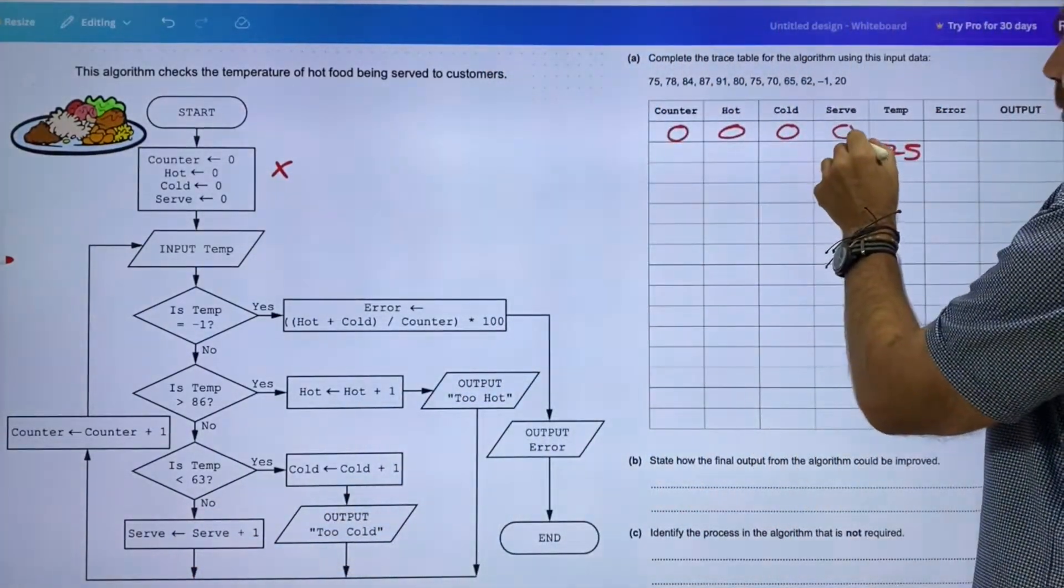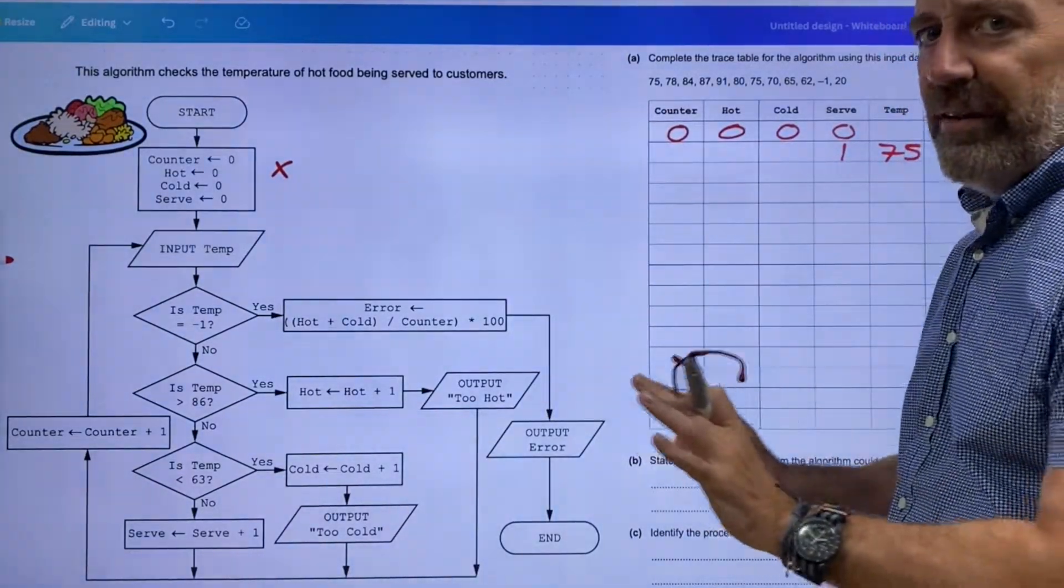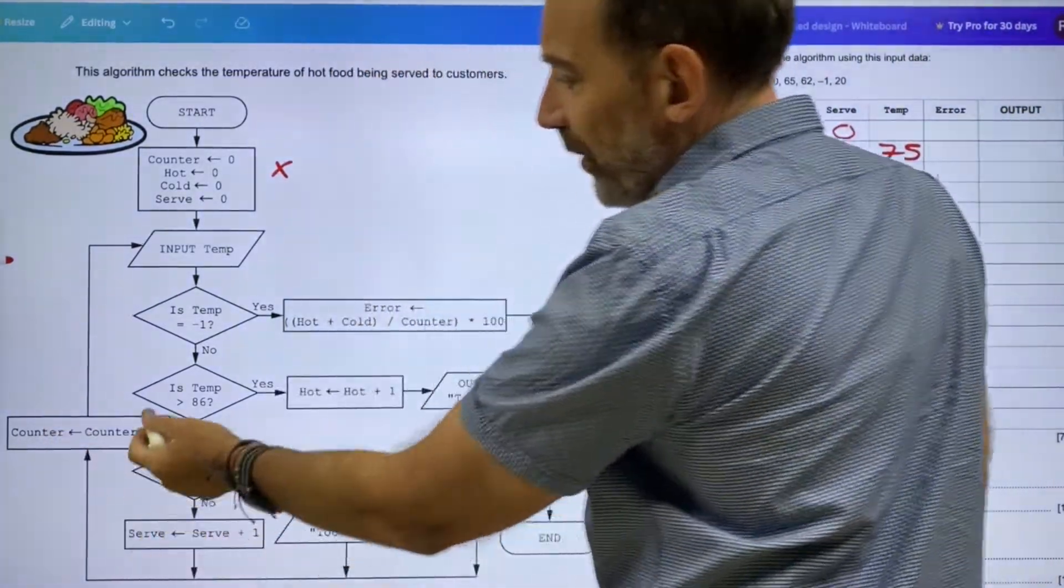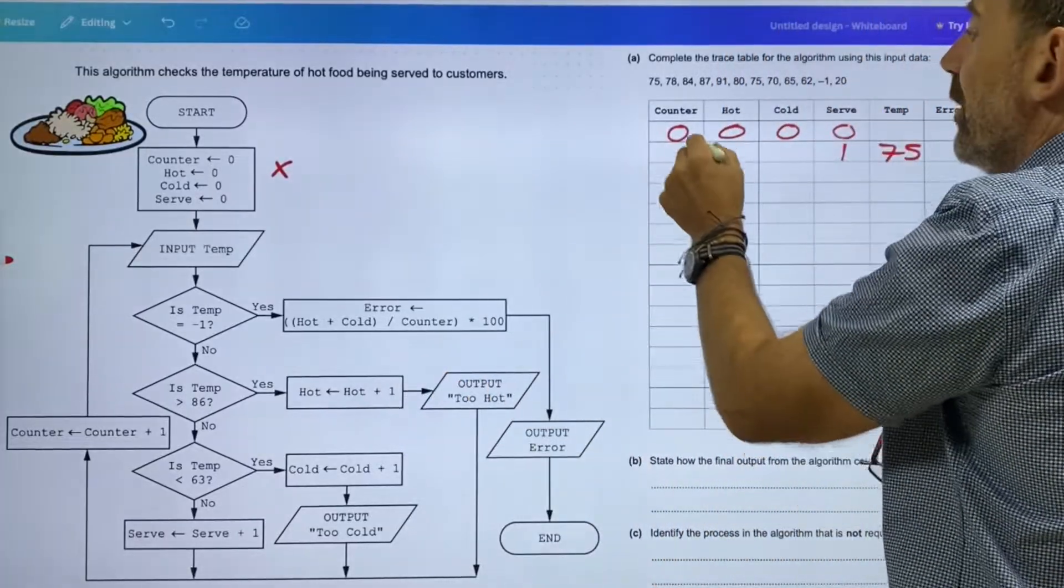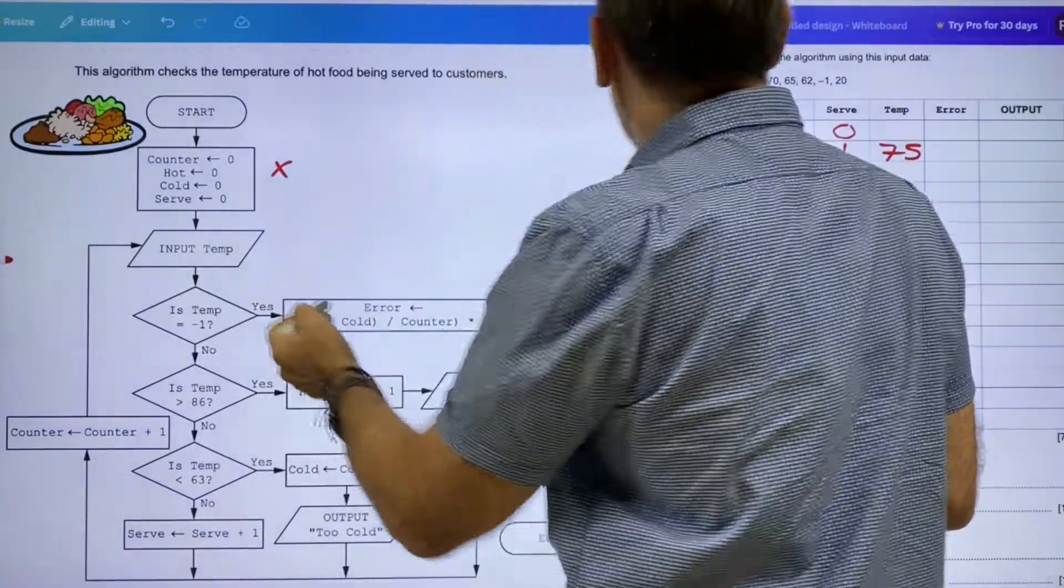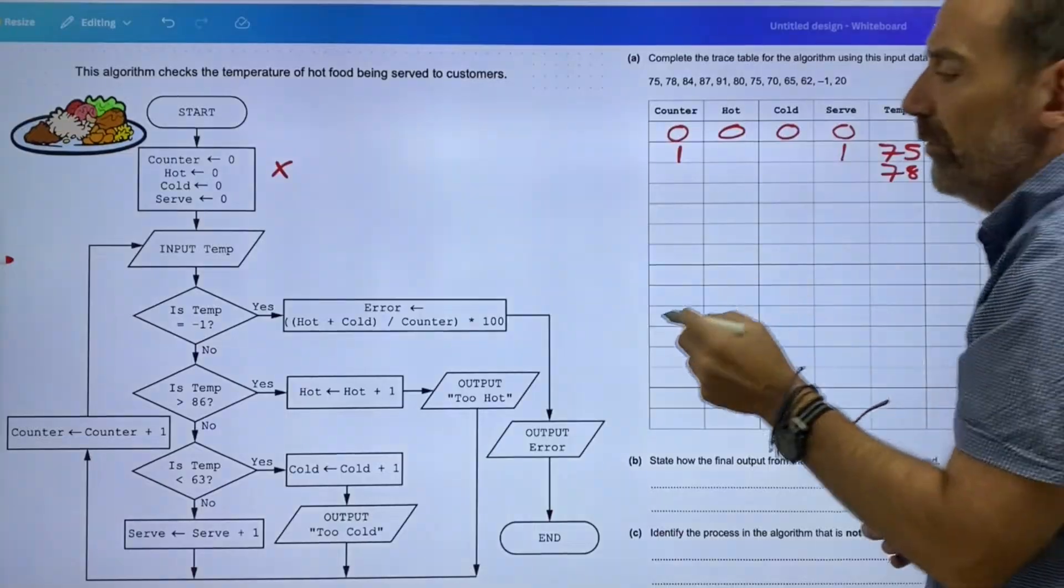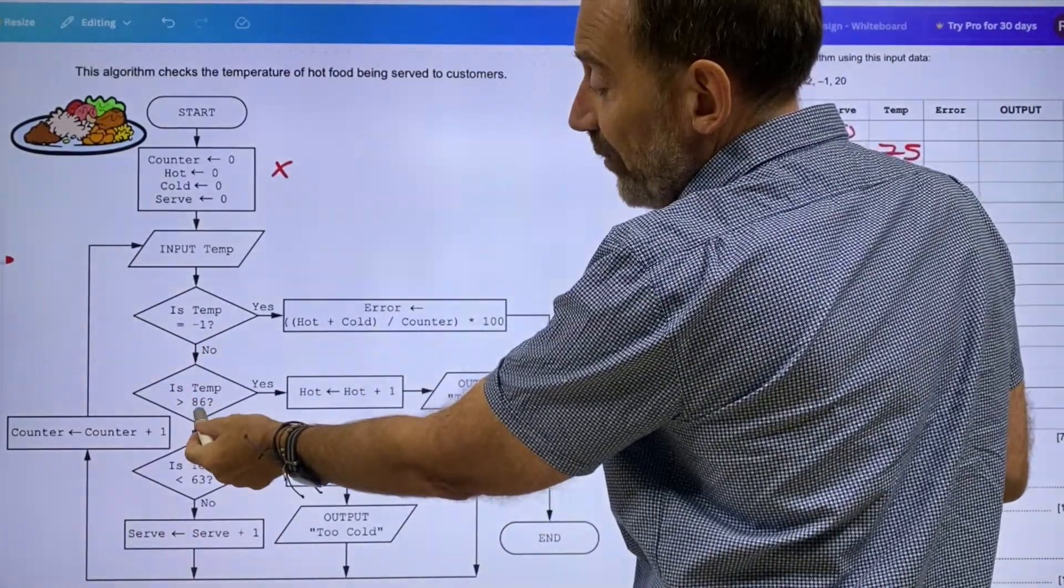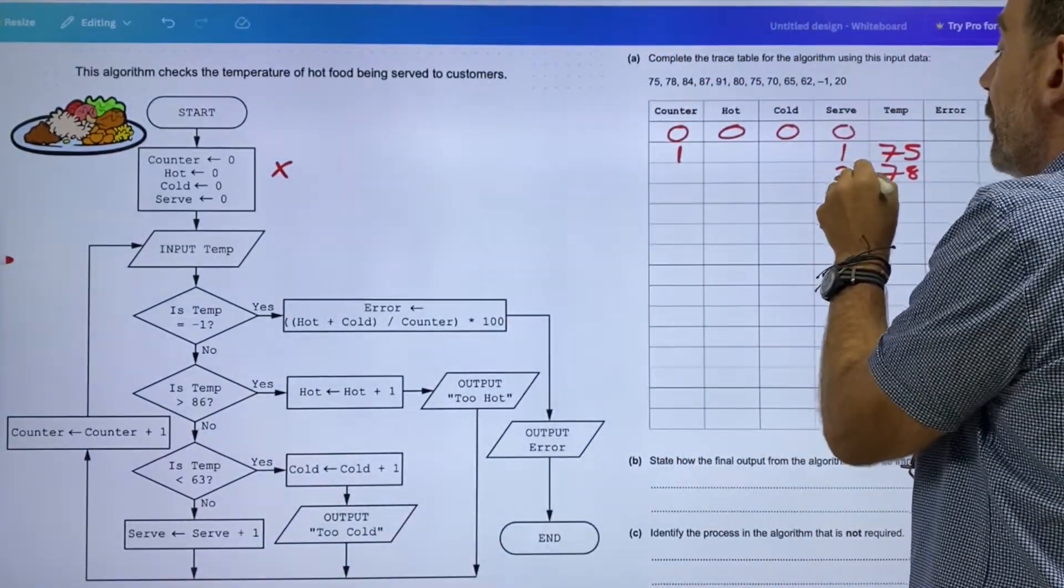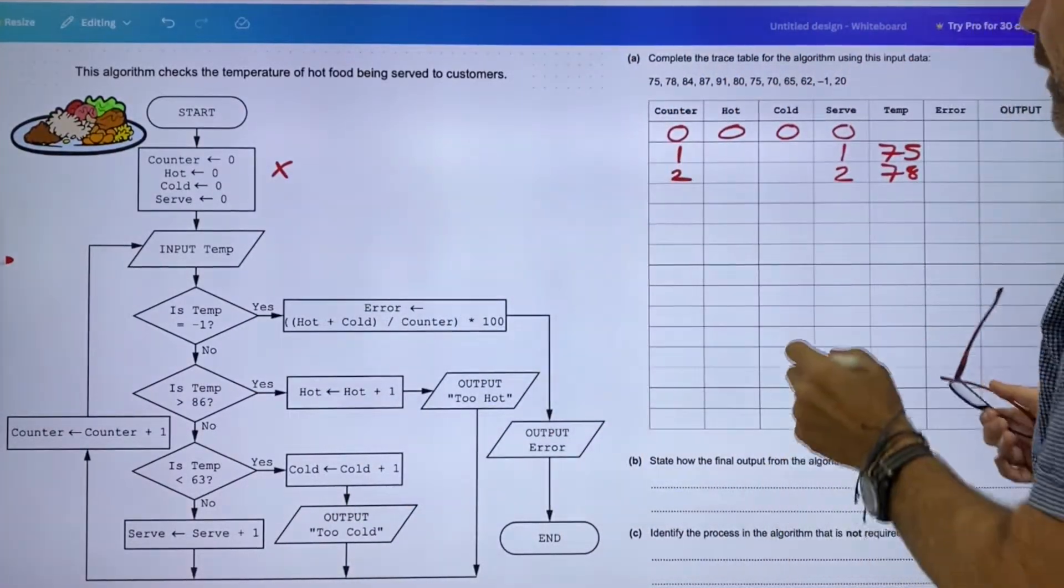Is the temperature greater than 96? No. Is the temperature less than 63? No. Serve equals serve plus one. So serve plus one, I've got one in there, so it looks like we can serve that dish because it's the right temperature. Counter has been assigned the value counter plus one. Back up to input temperature, 78 this time.